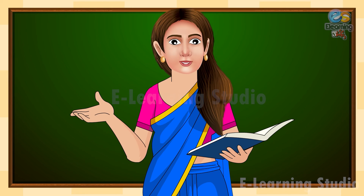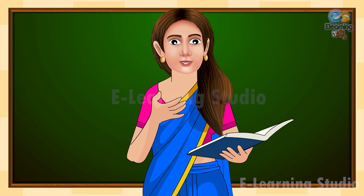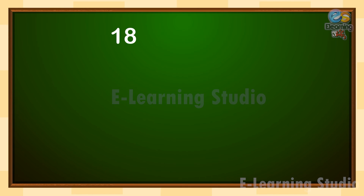Let us understand with the help of another example. 18 divided by 6 means 18 shared into 6 equal groups, which would be 3.